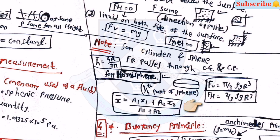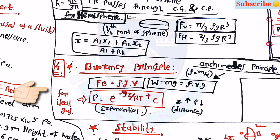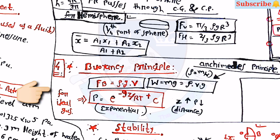x-bar equals A1-x1 plus A2-x2 by A1 plus A2. Fv equals pi by 3 into rho-g-r-cube, and Fh equals 2 by 3 into rho-g-r-cube. h-bar equals 4r by 3pi. For the buoyancy principle, Fb equals rho-g into V. W equals m into g equals rho-g-V.